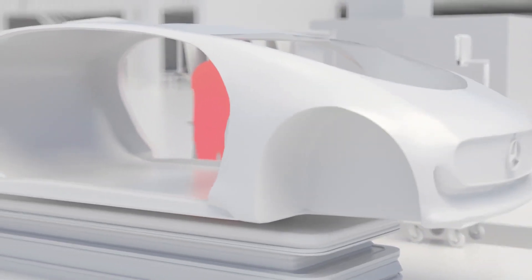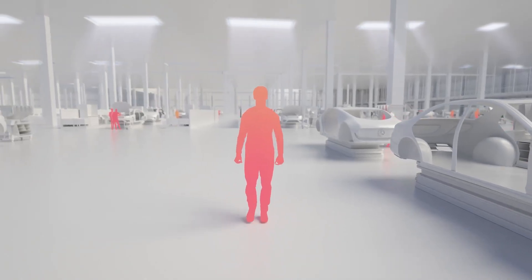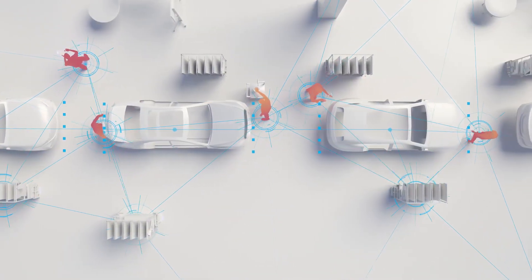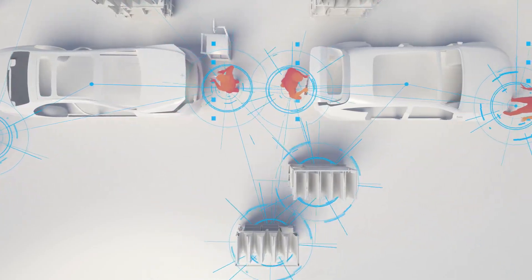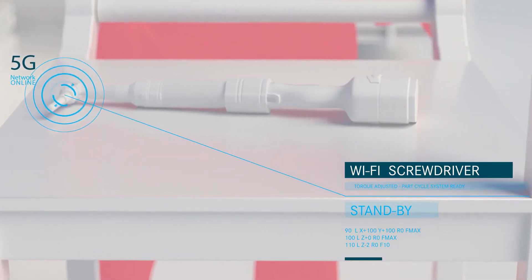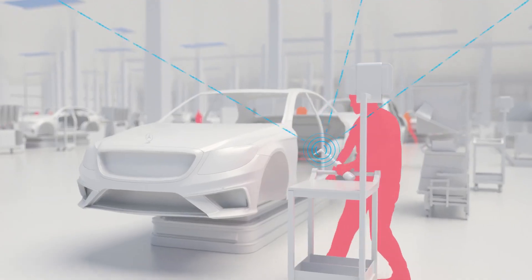And self-driving cars, side by side. We are creating a completely new infrastructure in Factory 56. The production facility communicates with its surroundings and the vehicle. This is possible because Factory 56 uses a proprietary, high-performance wireless and cellular network.